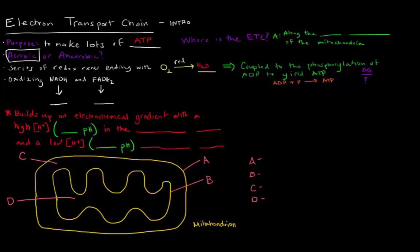More specifically, the purpose of the electron transport chain is to re-oxidize all the NADHs and FADH2s that we've made up until this point — whether it was in glycolysis, the pyruvate dehydrogenase complex, or the TCA cycle. Any NADHs and FADH2s that we made will be re-oxidized back into NAD+ and FAD respectively.